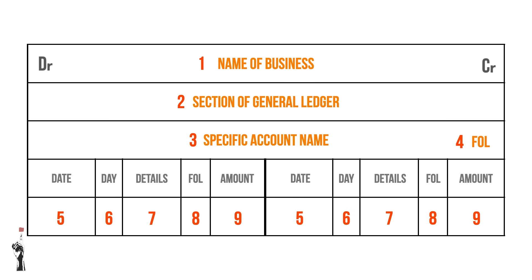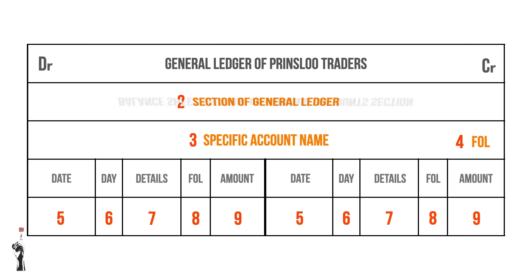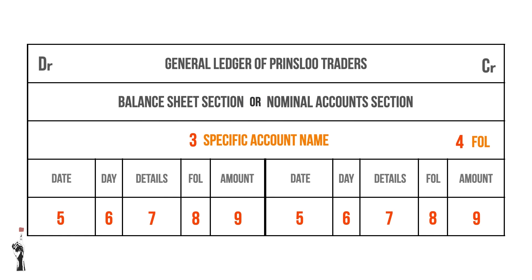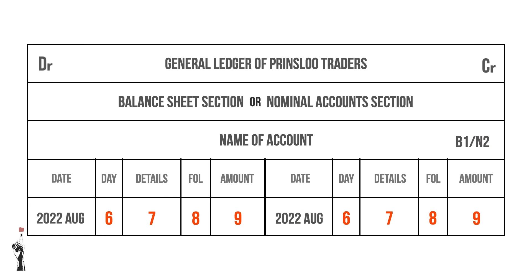At the top of the general ledger, the name of the business should be recorded first. Then the section of the general ledger should be recorded — there are two sections called the balance sheet section and the nominal account section. The specific account name should also be recorded, along with the folio number of the specific account, for example B1 or N2. Also record the year and month in which this general ledger takes place and the day of the transaction.